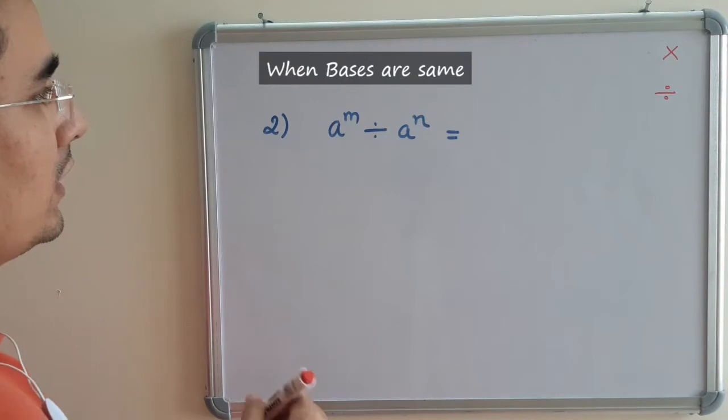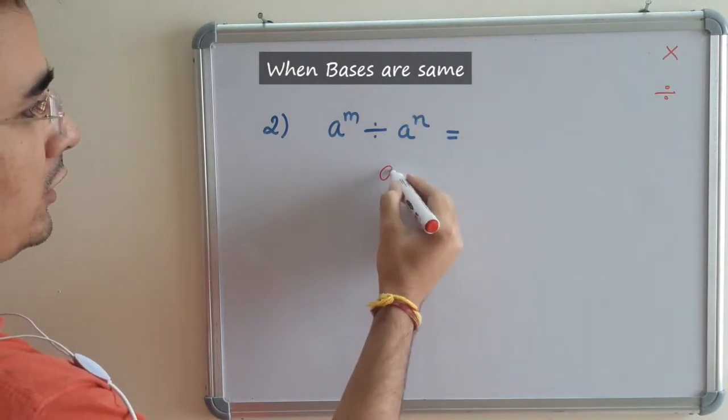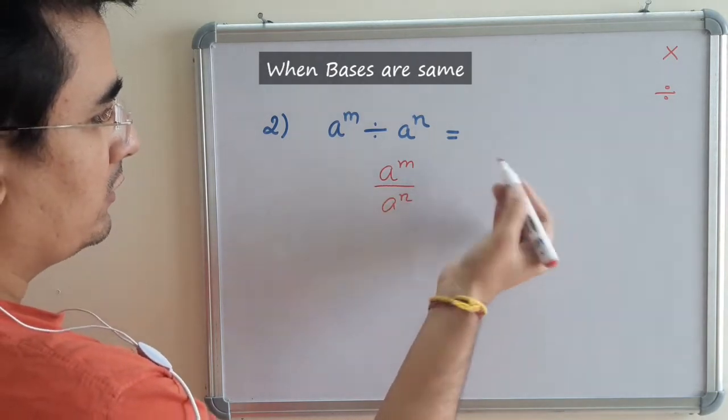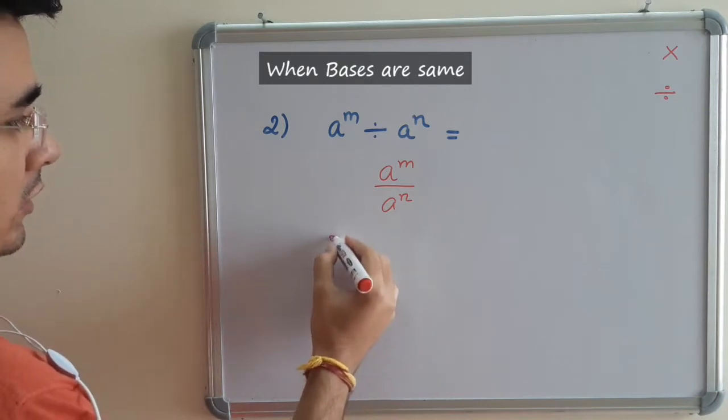Our second law is a^m divided by a^n. We can also write it as a^m upon a^n. It means the same thing - we are dividing with the same base. Let us take one example.